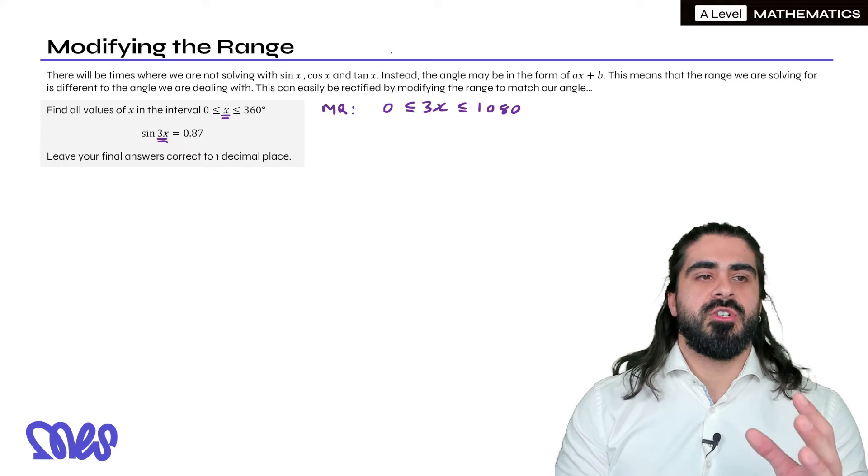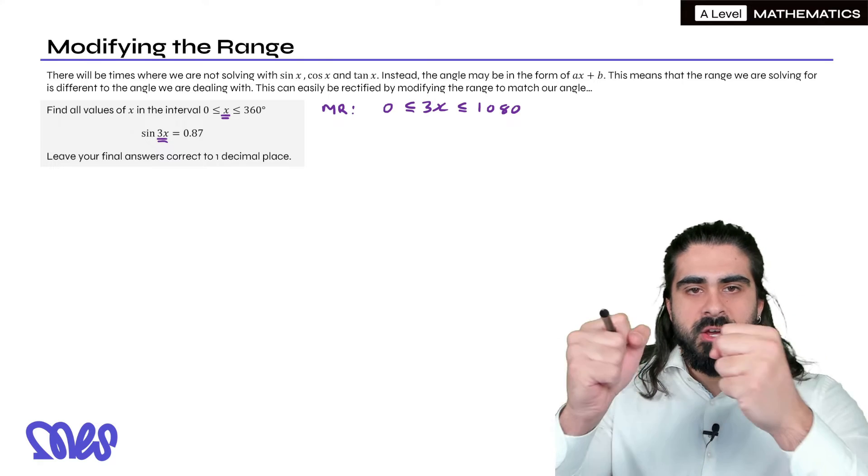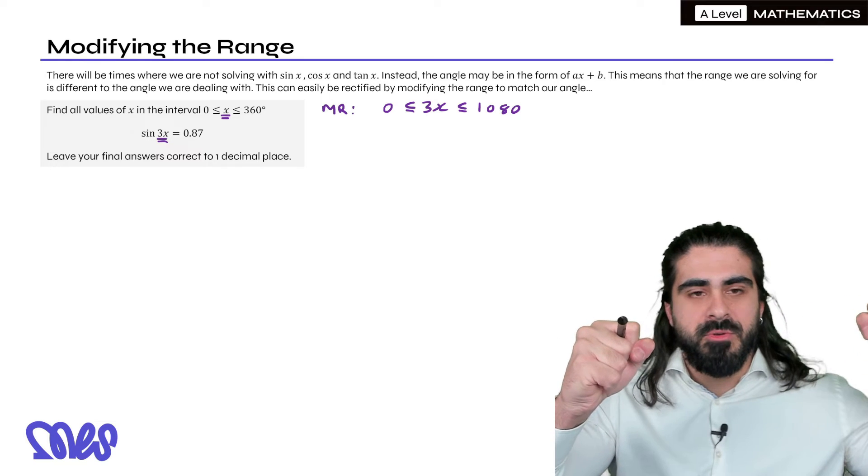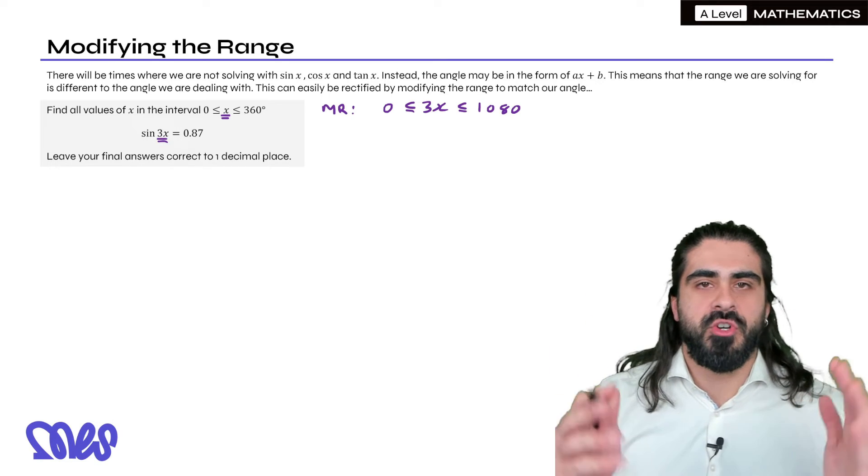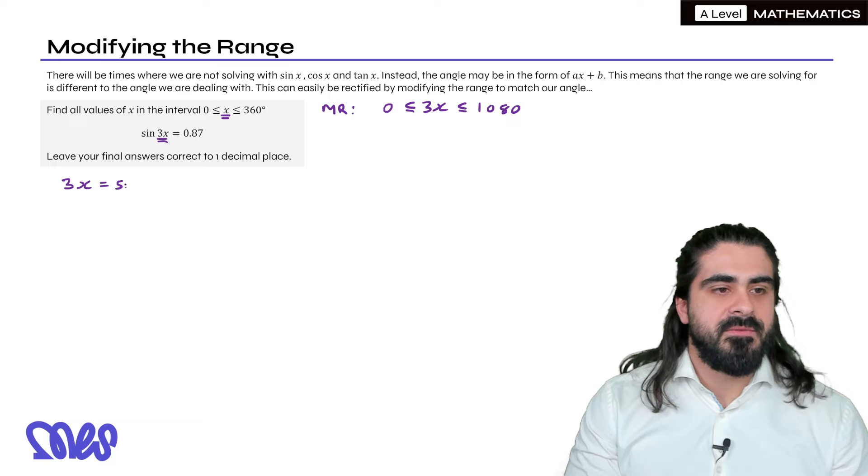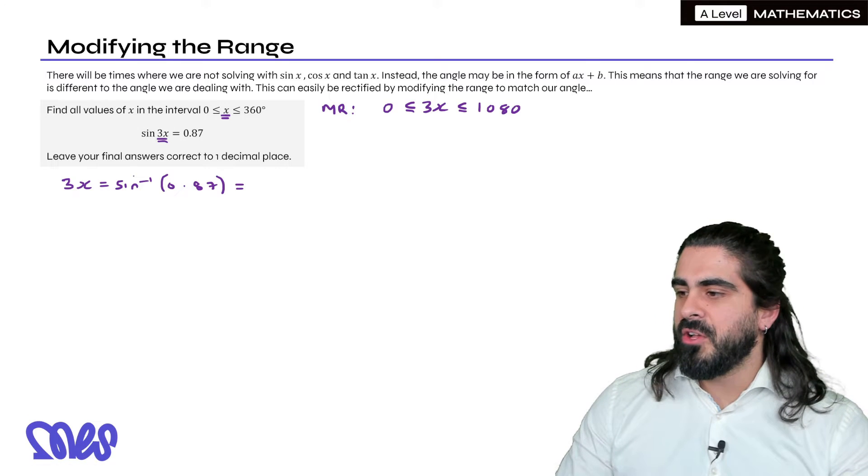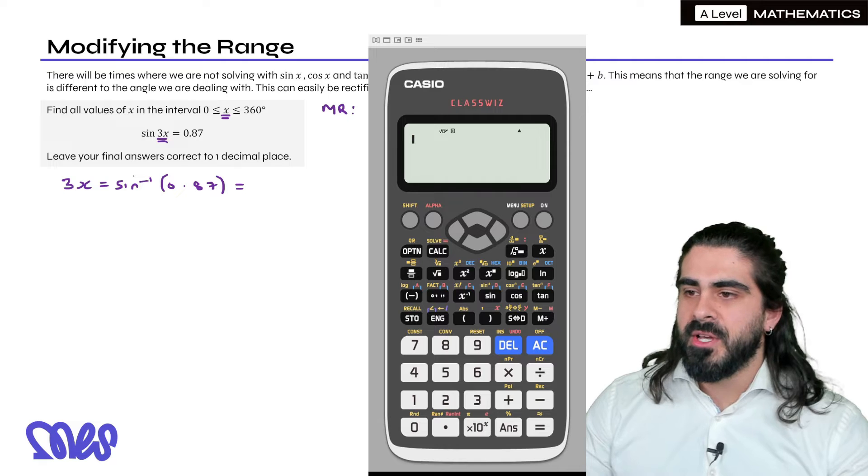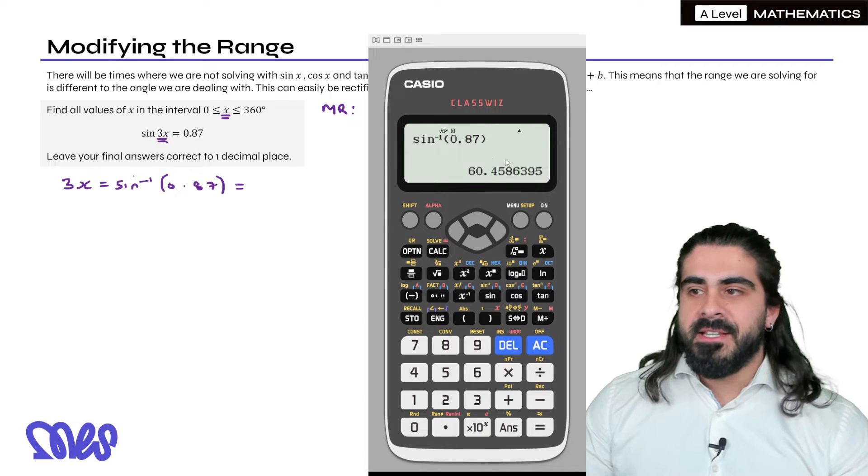Now by doing this what we're essentially doing is we know the sine 3x graph is three sine graphs within the same domain between 0 and 360. We're stretching it, we're pulling it up to 1080 so that then we can apply the simple PVSV rules and 360 etc. You can't do it when the graph is squashed. So now we can do it, we can say look 3x is the inverse sine of 0.87. And I'm going to show you guys a cool trick that allows us to save answers so we keep our answers as accurate as possible.